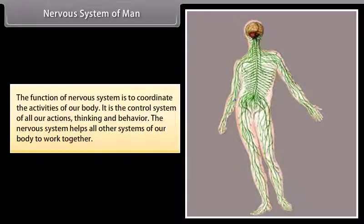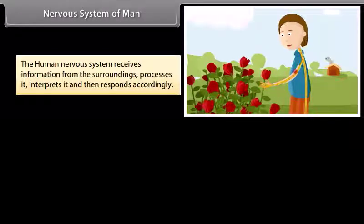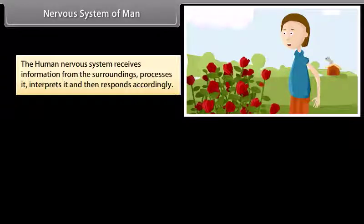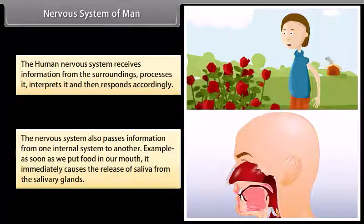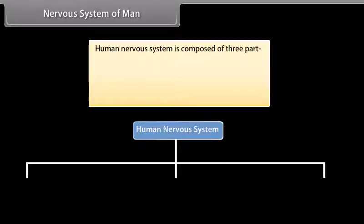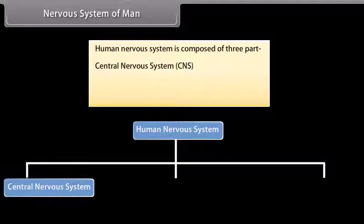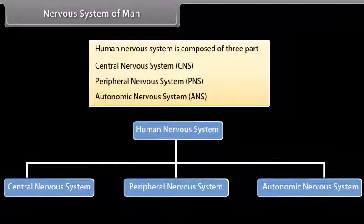Nervous system of man. The function of the nervous system is to coordinate the activities of our body. It is the control system of all our actions, thinking, and behavior. The nervous system helps all other systems of our body to work together. The human nervous system receives information from the surroundings, processes it, interprets it, and then responds accordingly. It also passes information from one internal system to another — for example, as soon as we put food in our mouth, it immediately causes the release of saliva from the salivary gland. The human nervous system is composed of three parts: central nervous system (CNS), peripheral nervous system (PNS), and autonomic nervous system (ANS).